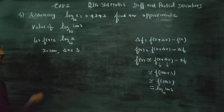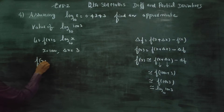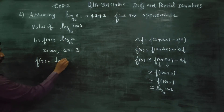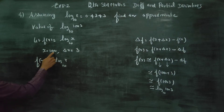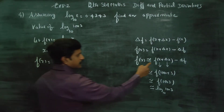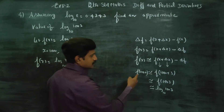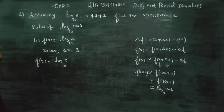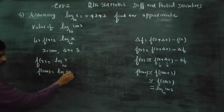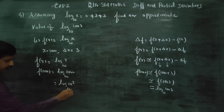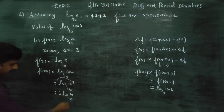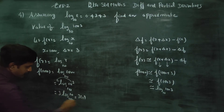Now I will find f of x. f of x is equal to log x base 10. I choose x equal to 1000. So f of 1000 base 10 can be written as log 10 cube base 10, which equals 3 log 10 base 10. The answer is 3.